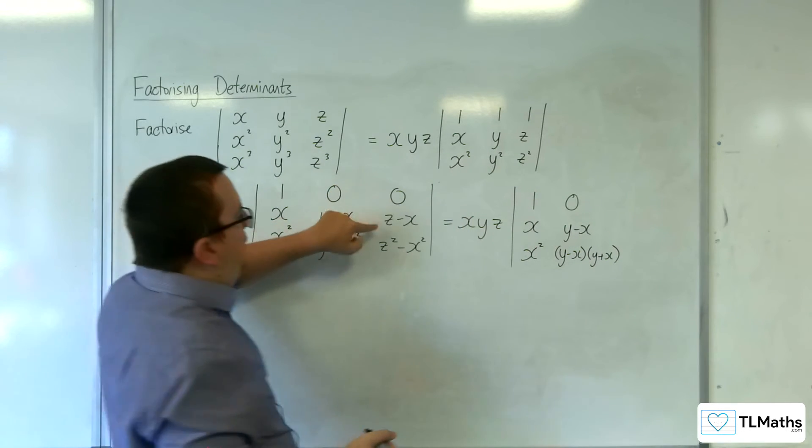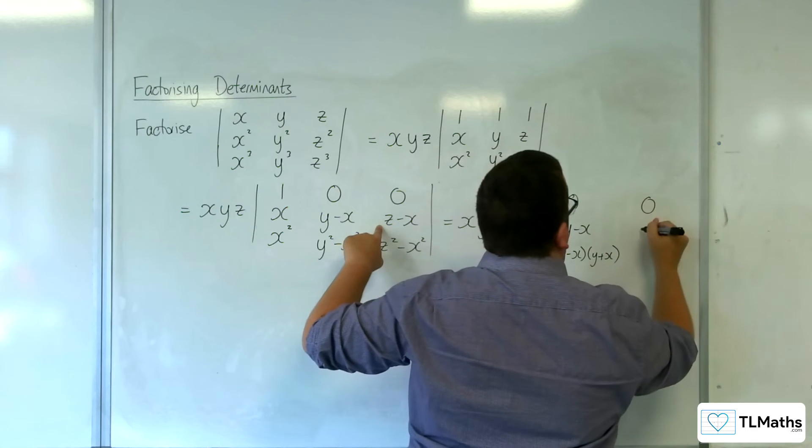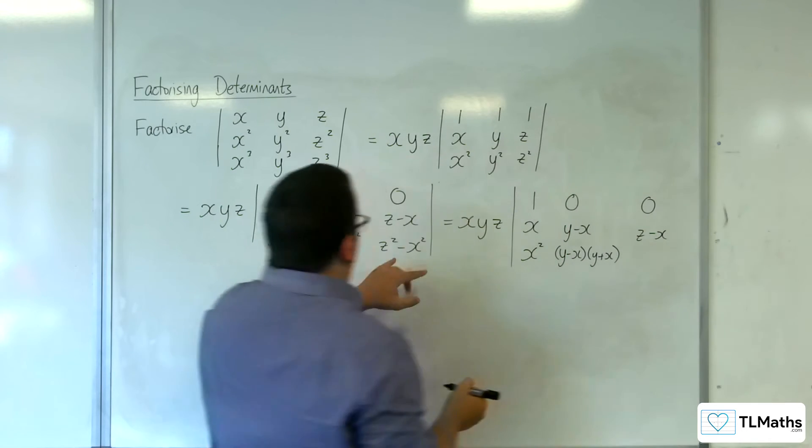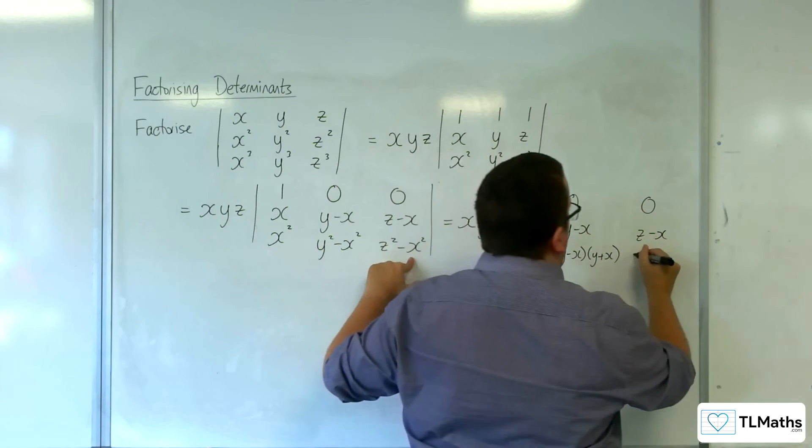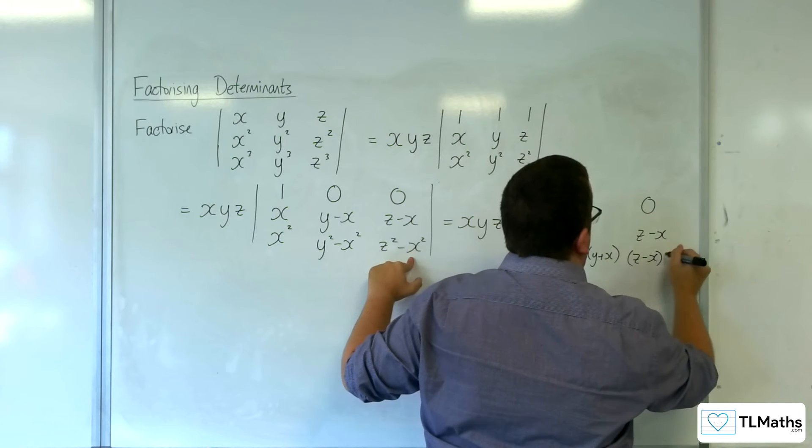Here we're going to have 0, z minus x, and factorizing this, z minus x, z plus x.